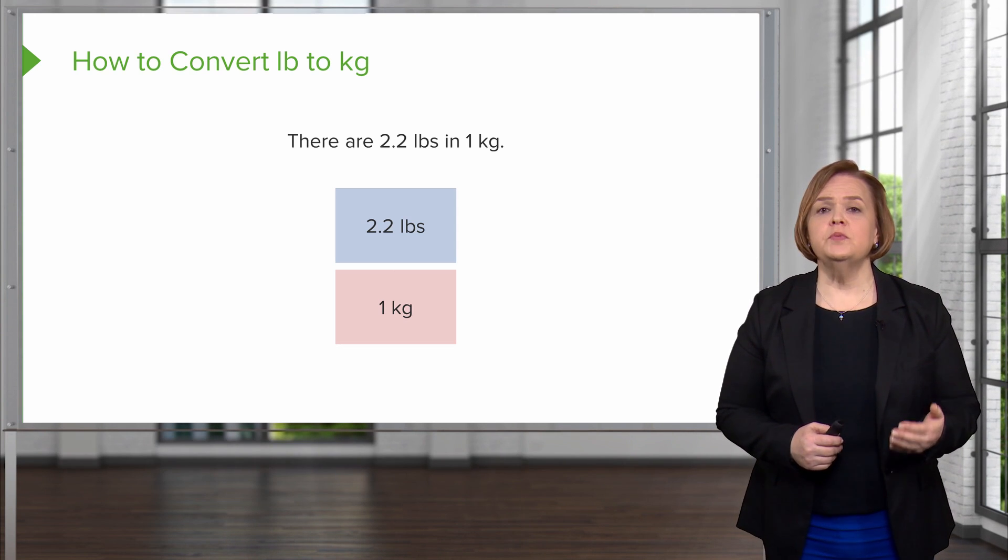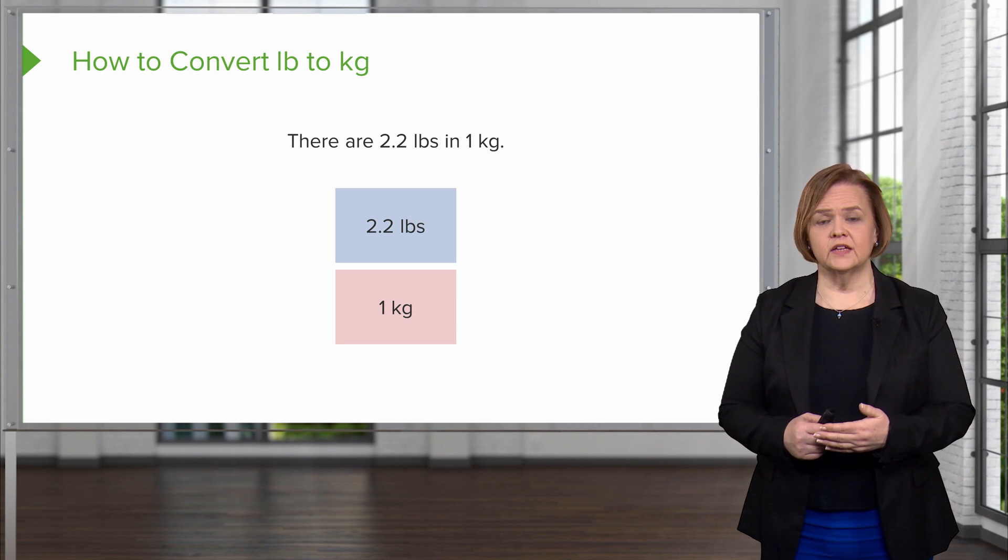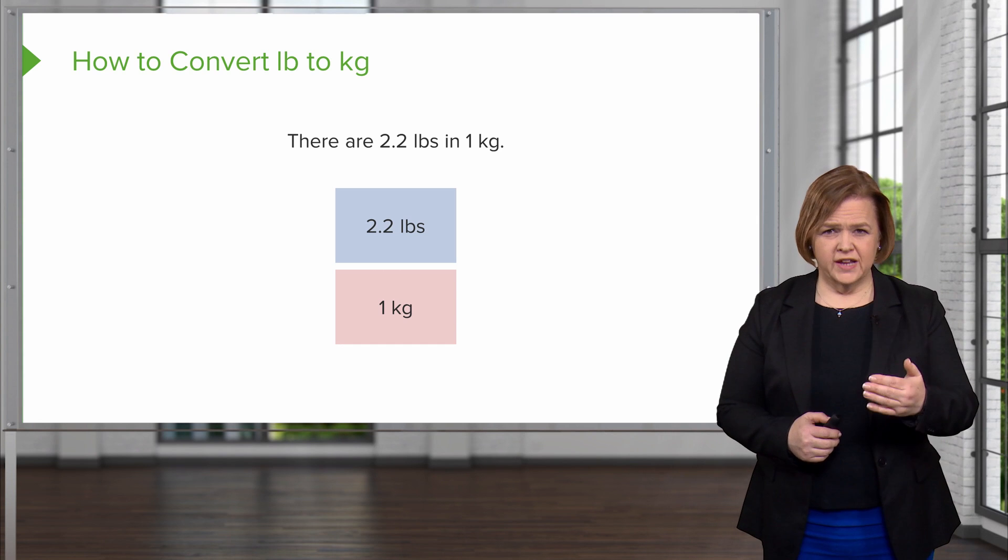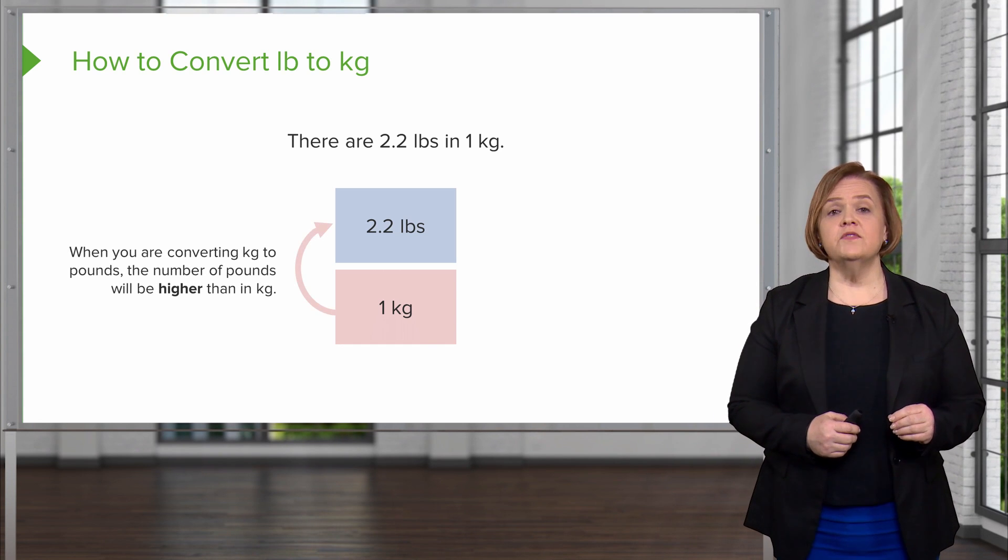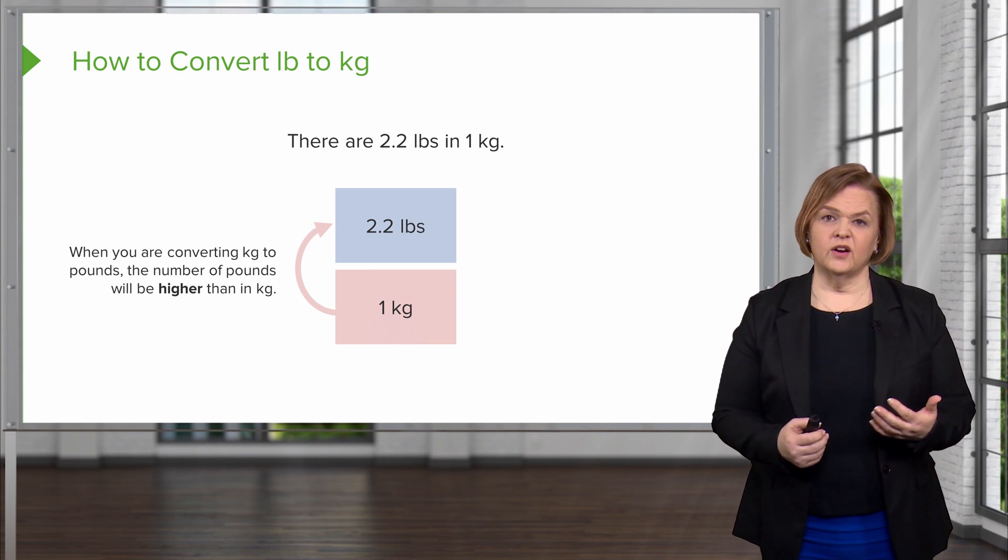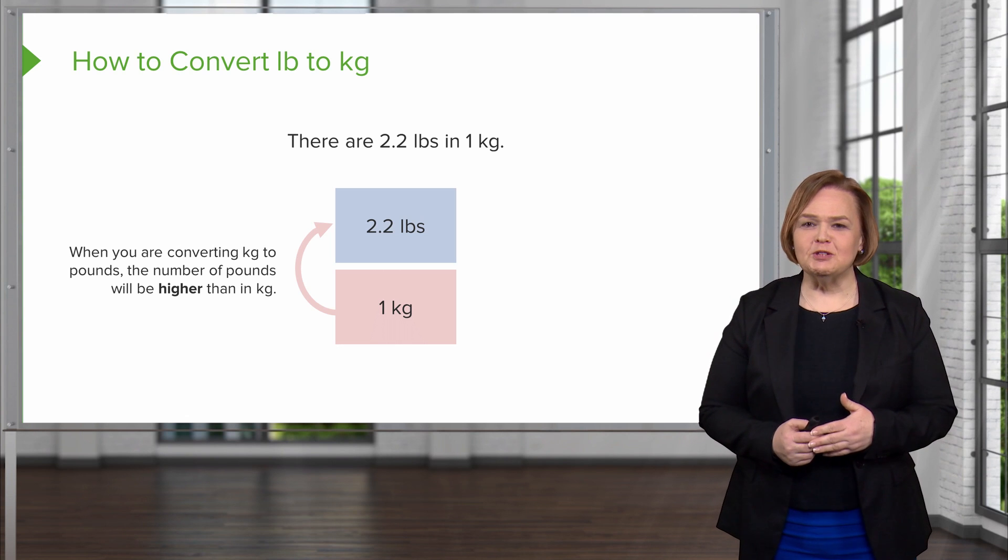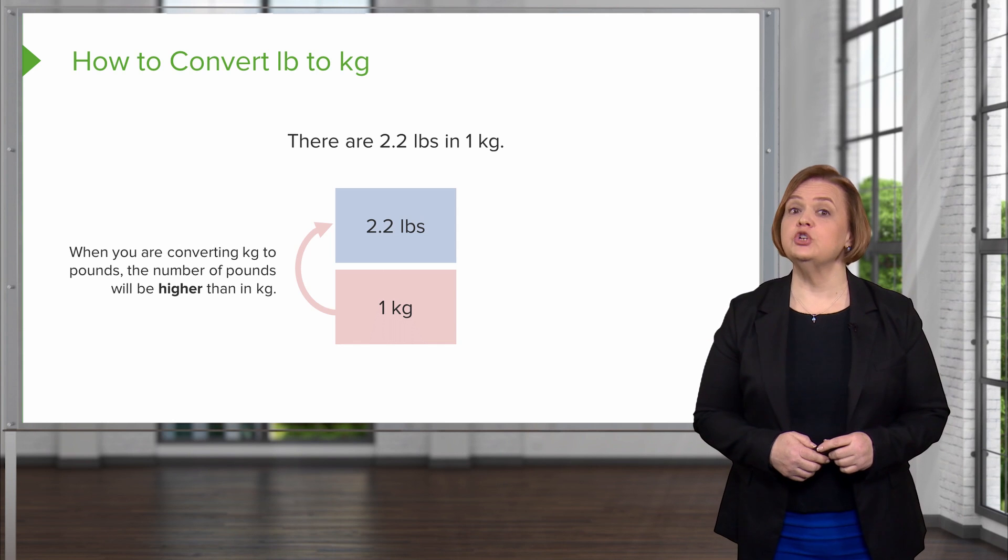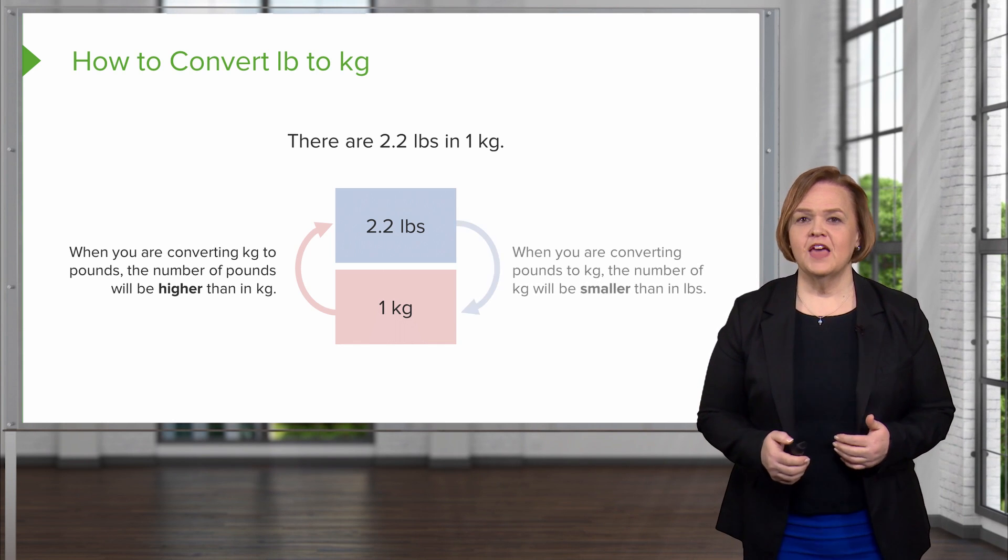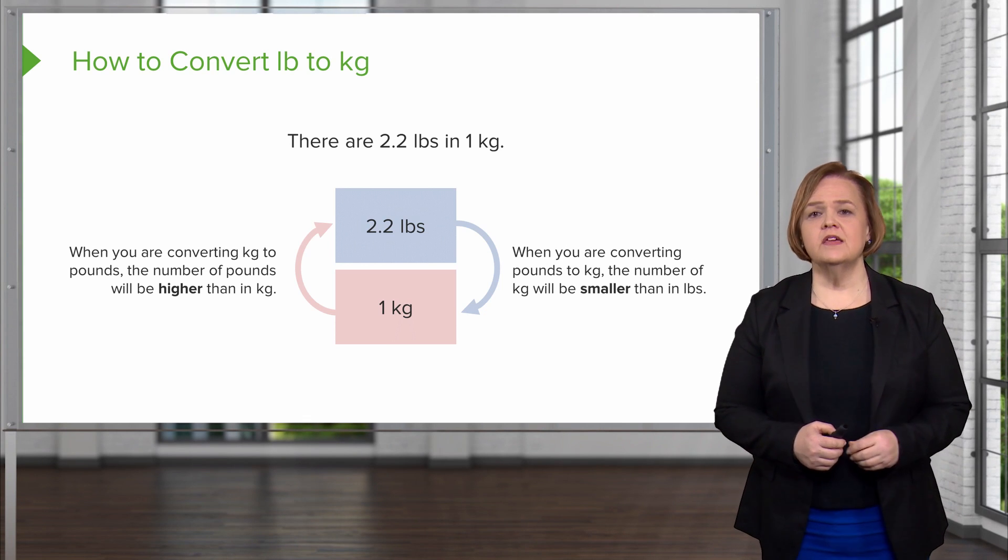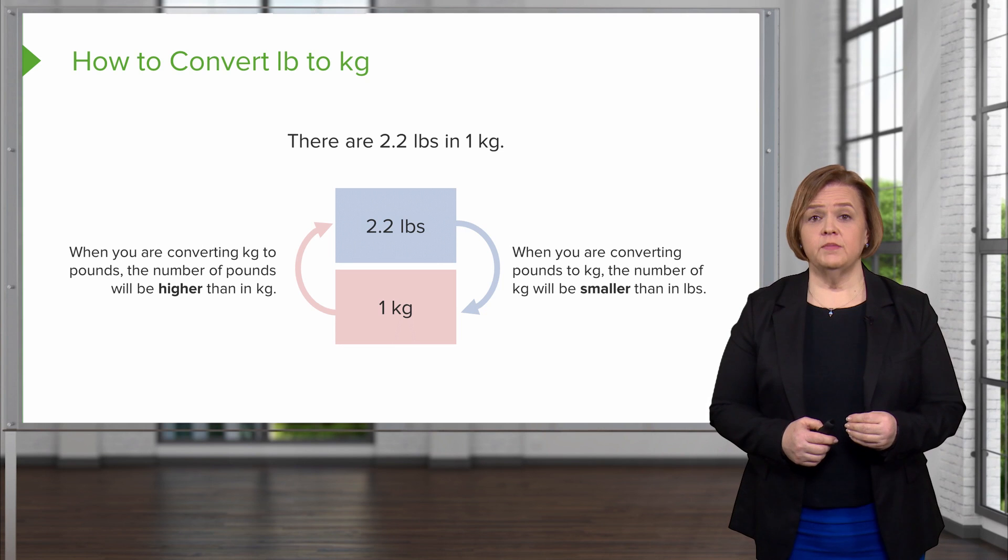Now remember there are 2.2 pounds in one kilogram. So we've got the blue box for 2.2 and the reddish box for one kilogram. When you're converting kilograms to pounds, the numbers of pounds will be higher. So if you're someone who's used to weighing yourself in kilograms and you see what that number is in pounds, you're going to be shocked, right? Because it's going to be higher. But if we're converting pounds to kilograms, the number of kilograms will be smaller than pounds because there are more pounds in one kilogram.